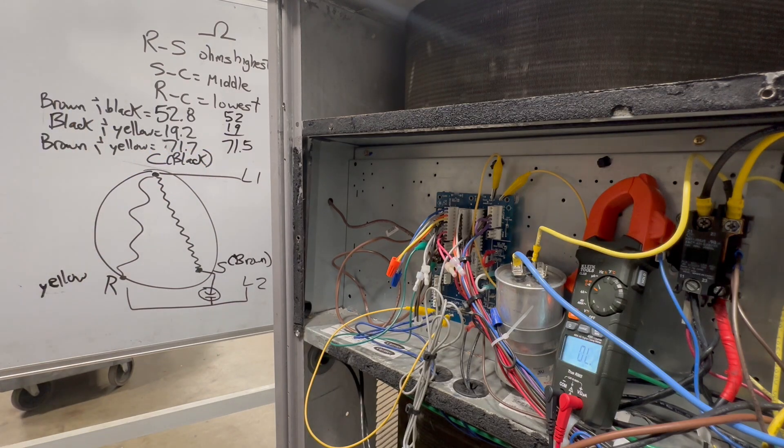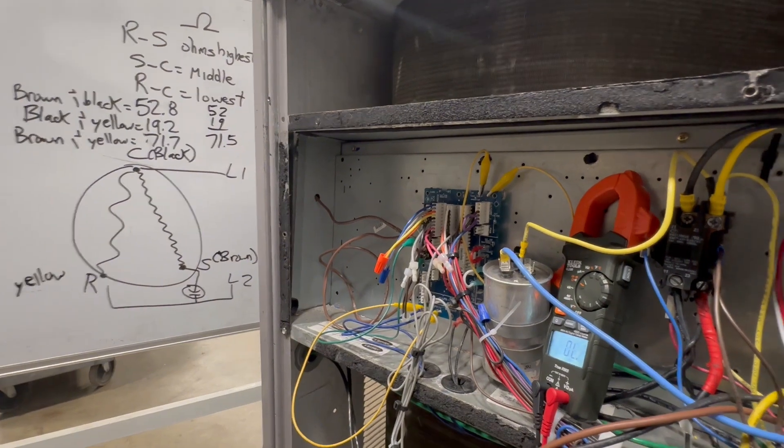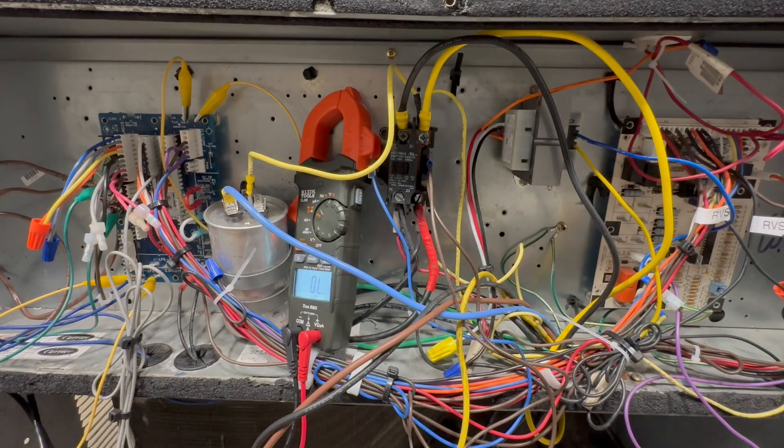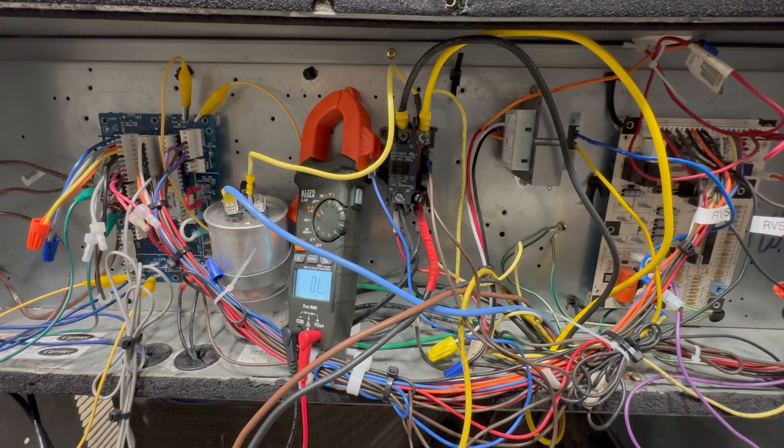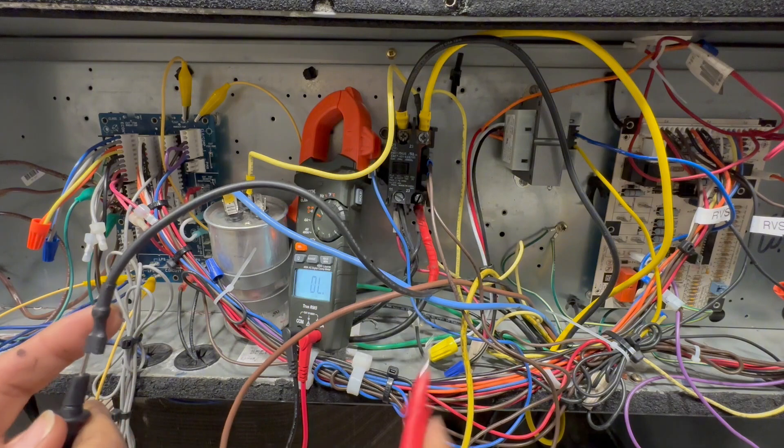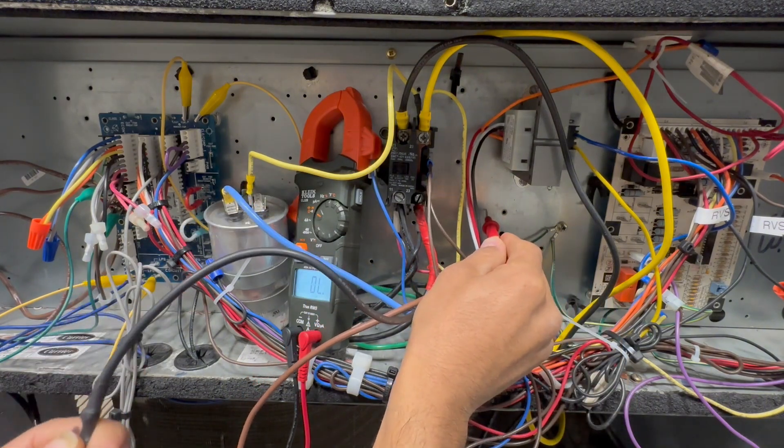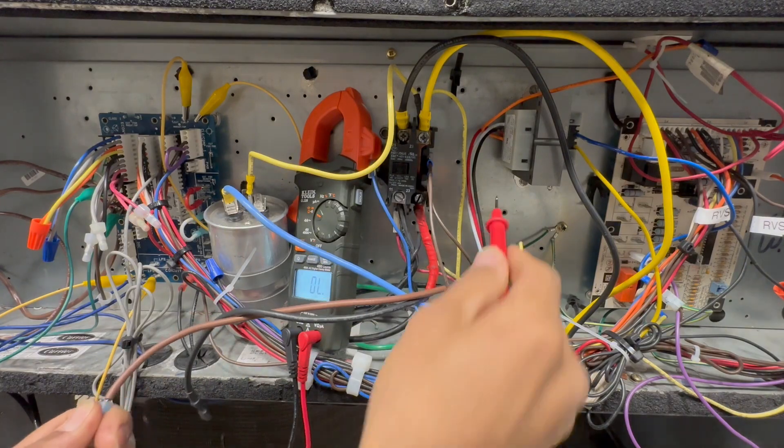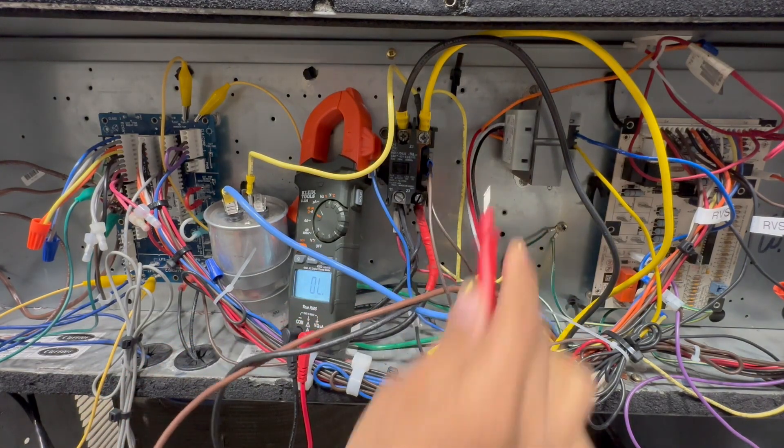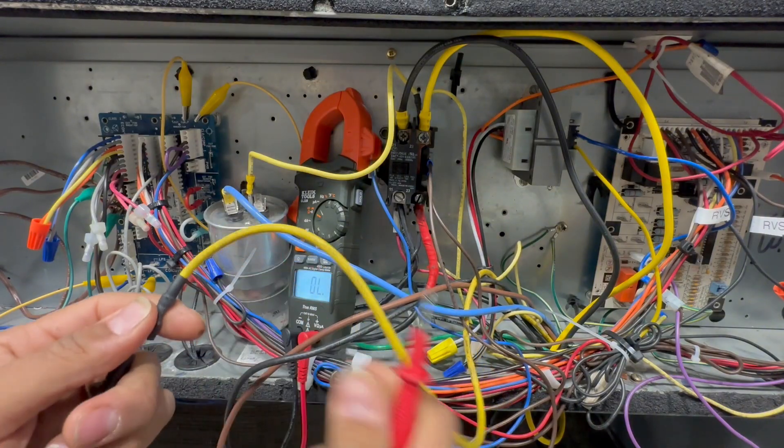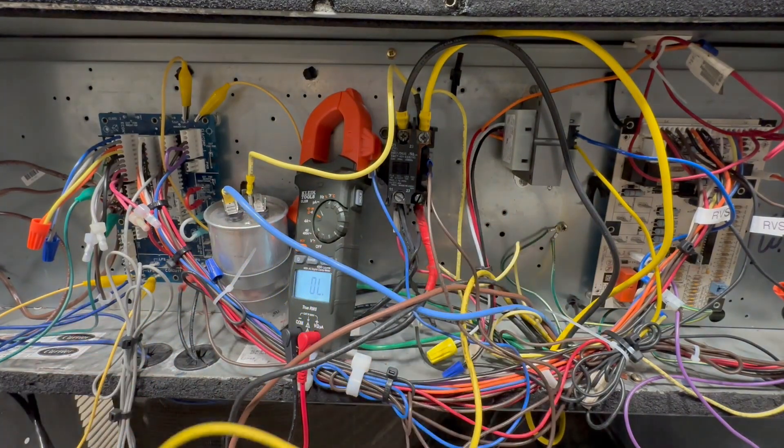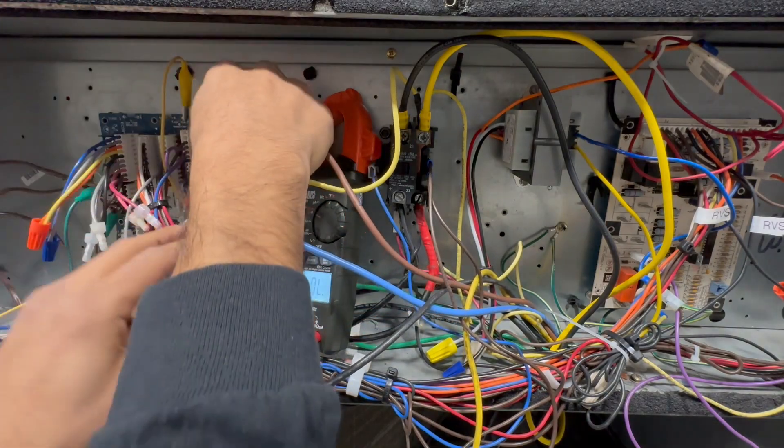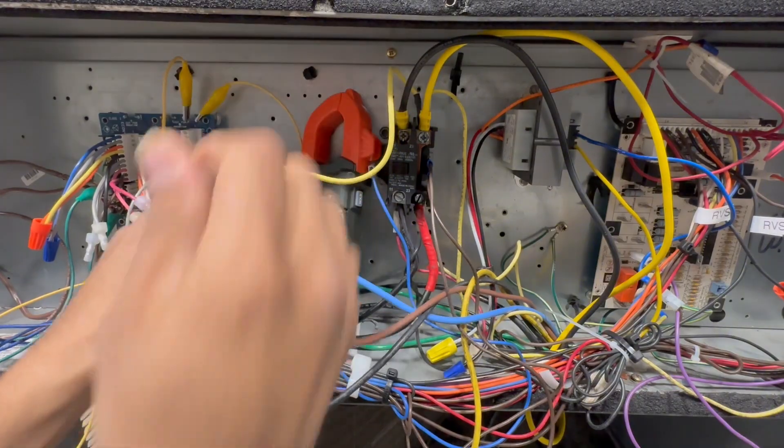So now that we've done this, now we can come back over here and do one little test, another test as well. You also want to make sure that we're not getting a path from any of these wires to ground. It should be open line. You also want to make sure that it's not grounded. So open line. I'll check my yellow one. Open line.